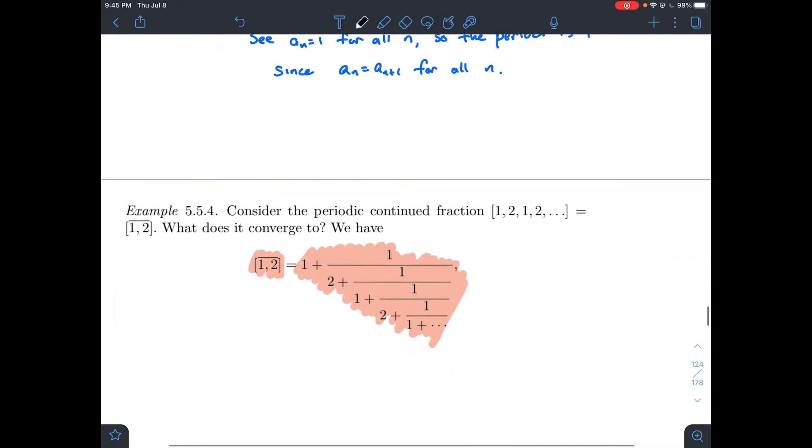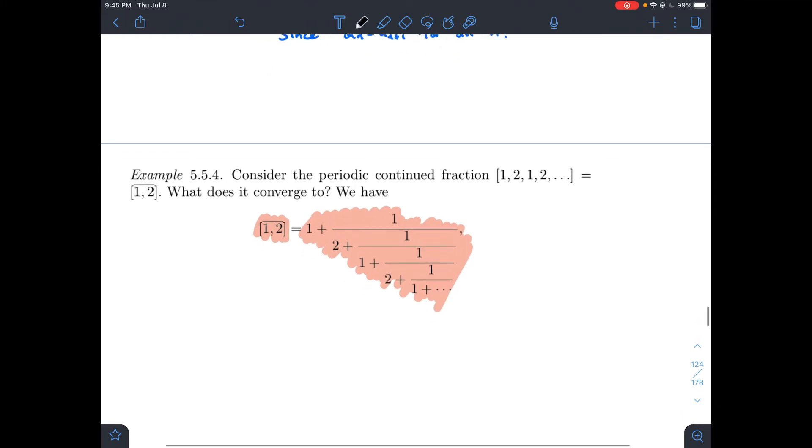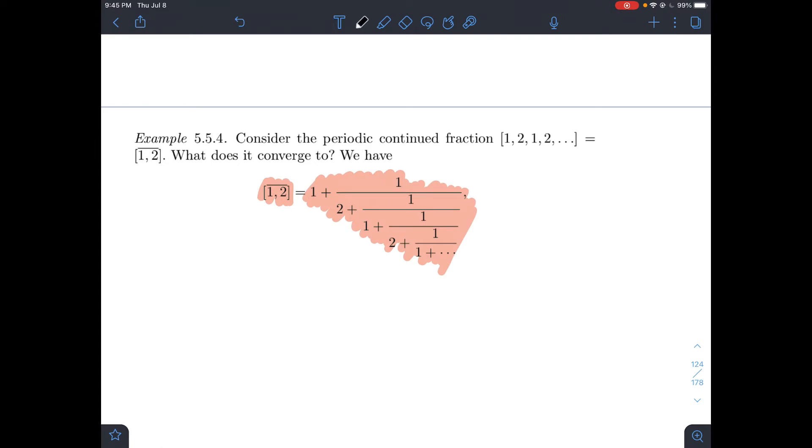On the next page is how do you compute some of these quadratic irrationals by hand? Another question is, if I've got a periodic fraction, could I figure out what number does this represent? In other words, what does it converge to? We can think about these as a limit.